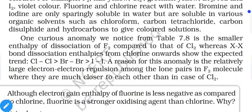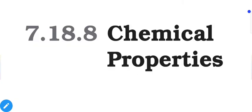A curious anomaly is the molar enthalpy of dissociation of F₂ compared to Cl₂. From chlorine onwards the expected trend holds — chlorine is higher than bromine, and bromine is higher than iodine — so fluorine should be higher than chlorine, but instead it is lower. The reason is the relatively large electron-electron repulsion between the lone pairs in F₂, which are much closer together than in Cl₂. Because of these shorter distances, electrons strongly repel each other, reducing the stability of fluorine and requiring less energy for dissociation. From the next lecture, we will discuss the chemical properties of these elements.